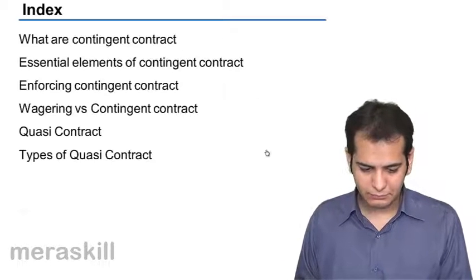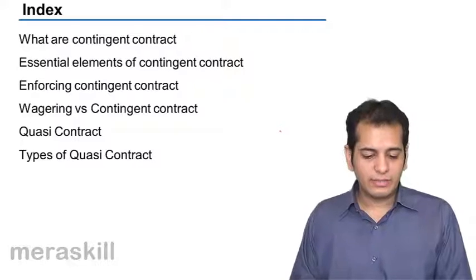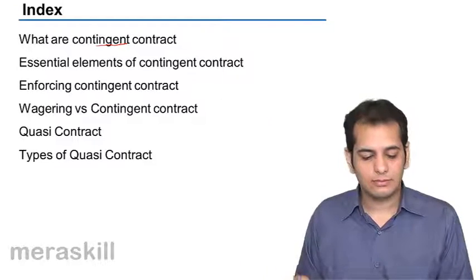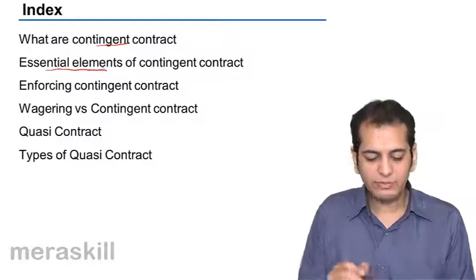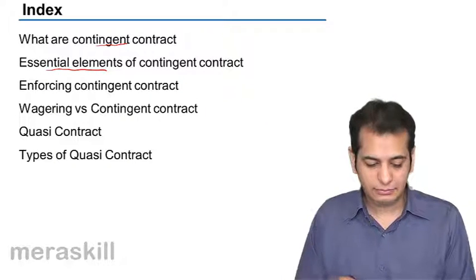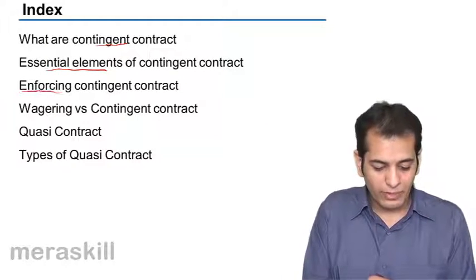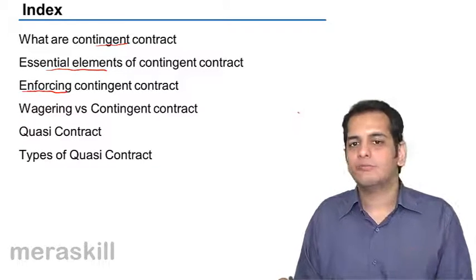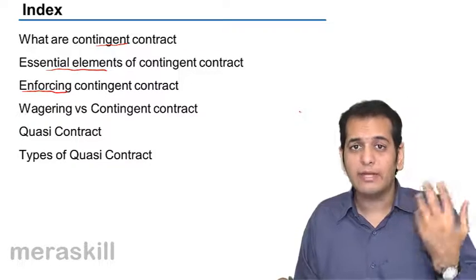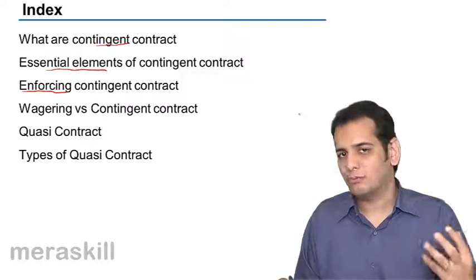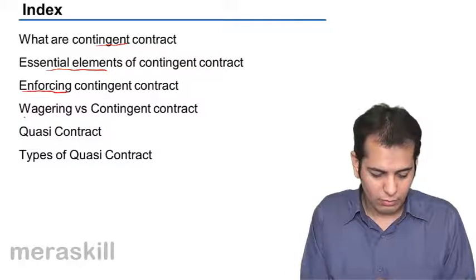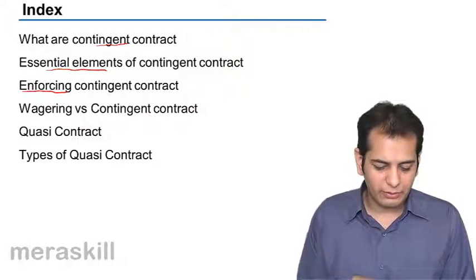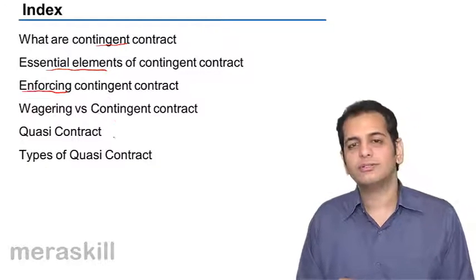We'll be studying what is a contingent contract, the essential elements of contingent contracts, when contingent contracts get enforceability, when they are enforceable, when they become valid, and then we'll distinguish between wagering and contingent contracts.